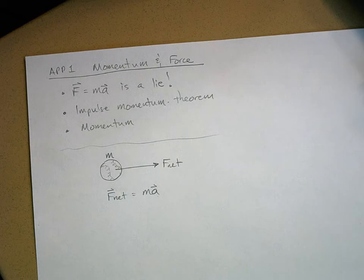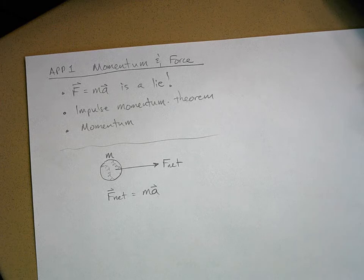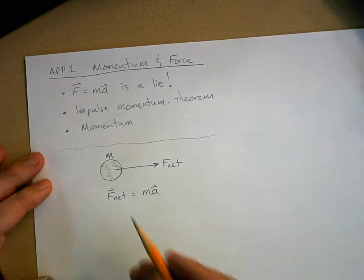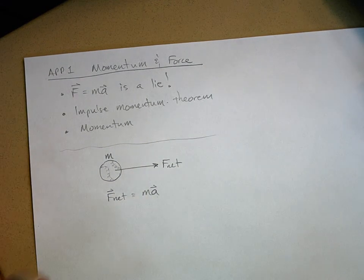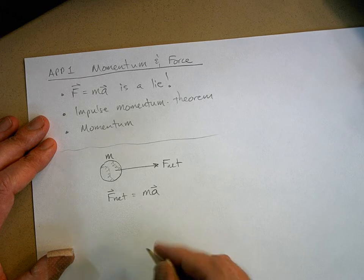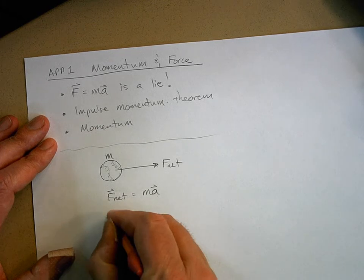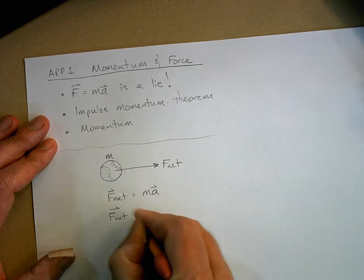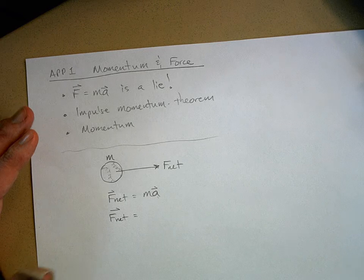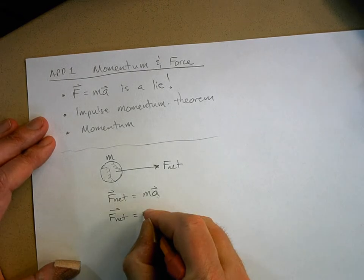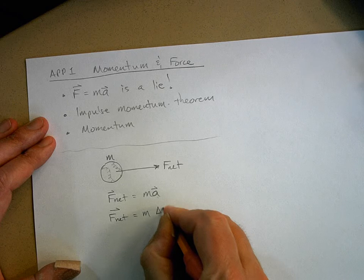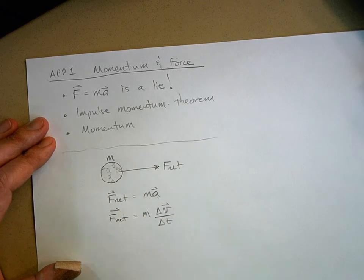You're going to see something kind of interesting. Let's assume the force is constant and the acceleration is constant. If the acceleration is constant, I can say the net force - well, acceleration causes a change in velocity - so this is mass times change in velocity over change in time.